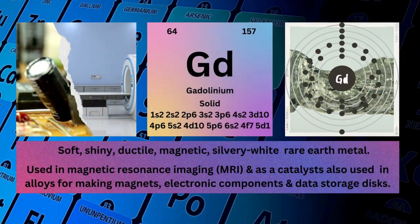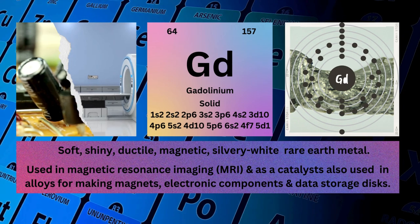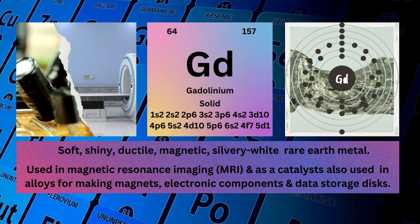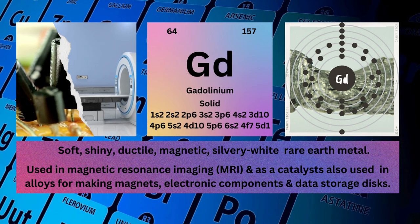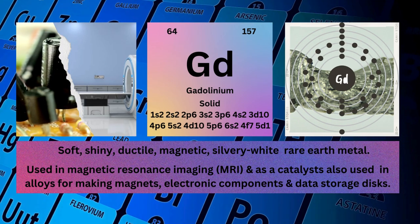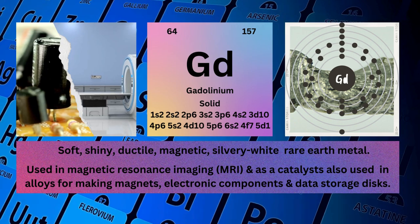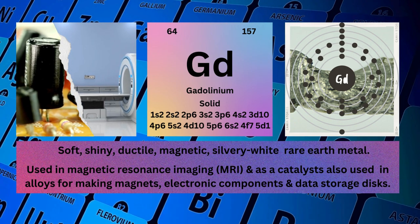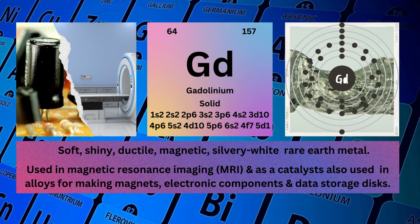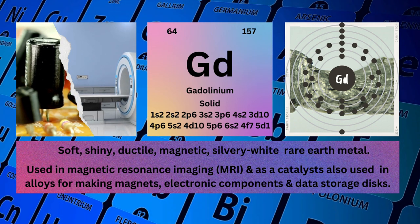Gadolinium. Atomic number: 64. Mass number: 157. Symbol: Gd. State: Solid.